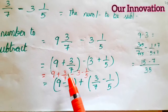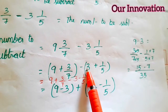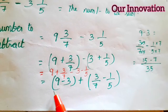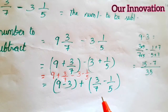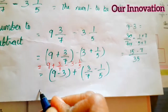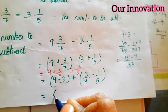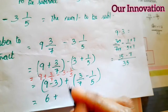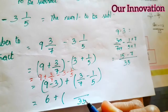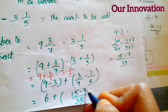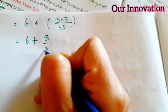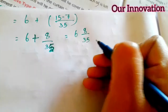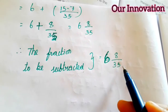So we can subtract. So whole number: 9 minus 3, plus fraction part: 3 by 7 minus 1 by 5. So 9 minus 3 is 6, and 15 minus 7 is 8 by 35. So 6 and 8 by 35. Therefore, the fraction to be subtracted is equal to 6 and 8 by 35.